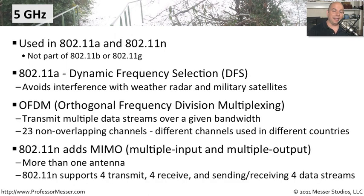In 802.11n, we also added something called MIMO, which stands for multiple input and multiple output. You'll often see an 802.11n access point with multiple antennas, because you're able to transmit and receive more than one signal at a time. You can have up to four transmits and four receives on an 802.11n network, allowing you to send and receive a lot more traffic at once.